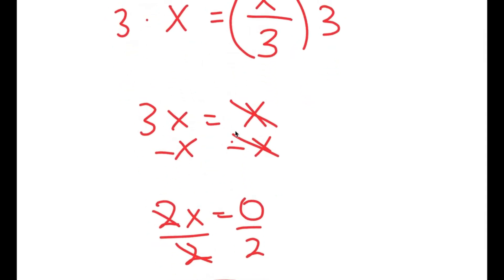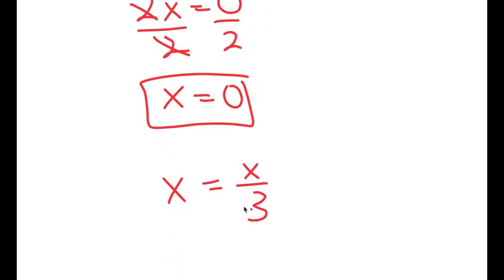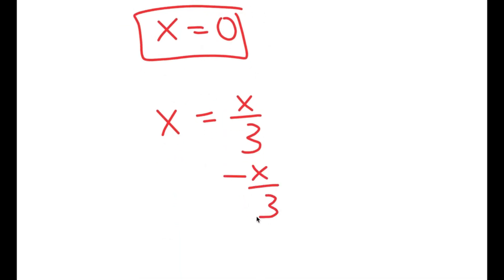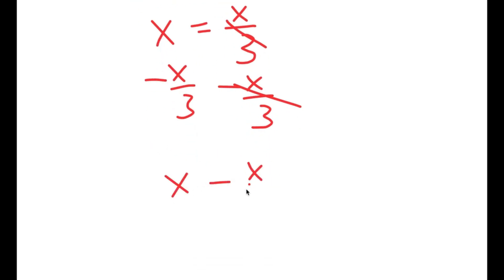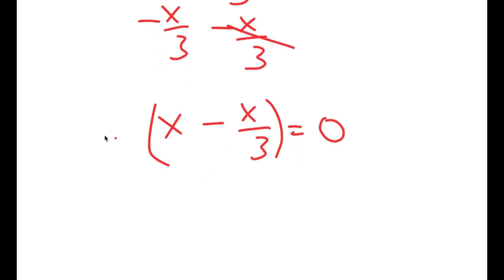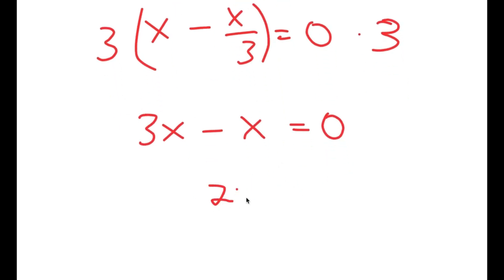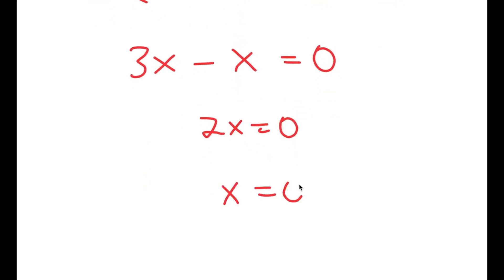Another way to solve this is: starting from x equals x over 3, subtract x over 3 on both sides to get x minus x over 3 is equal to 0. Then multiply both sides by 3: 3 times x is 3x, and 3 times x over 3 is just x. So 3x minus x equals 0, meaning 2x equals 0 and x equals 0.